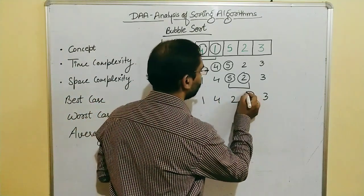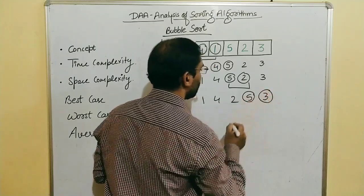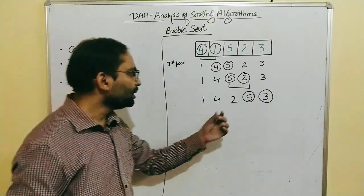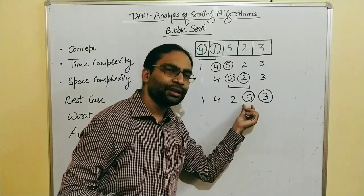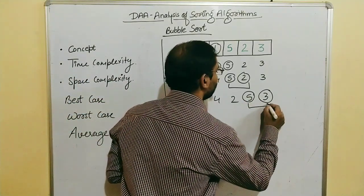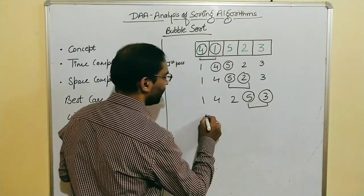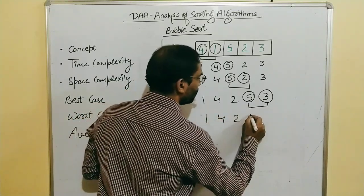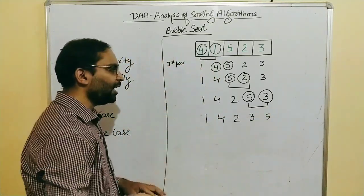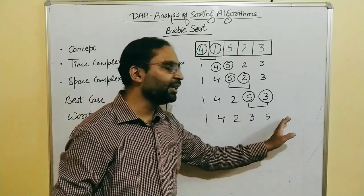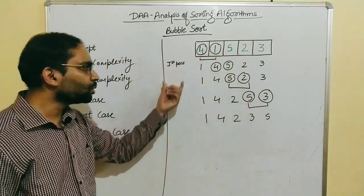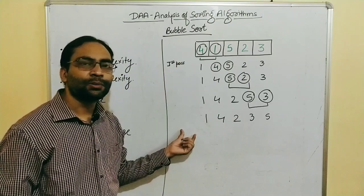Next, 5 and 3 are compared. Since 5 is larger, a swap is performed and 3 and 5 are swapped, giving us 1, 4, 2, 3, 5. As there are no more elements ahead, we are done with the first pass.